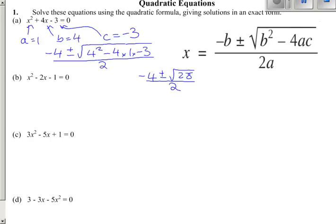Now this square root of 28 here can actually be split up, because 28 is the same as 4 times 7. The square root of 4 times 7, or the square root of 4 times the square root of 7.